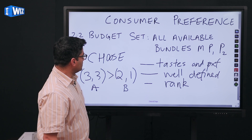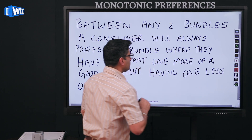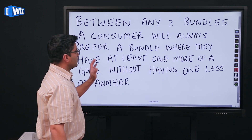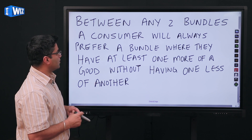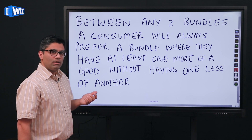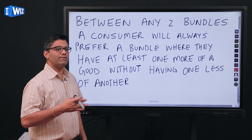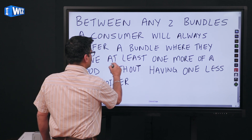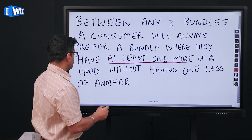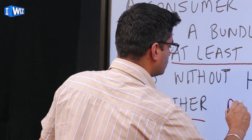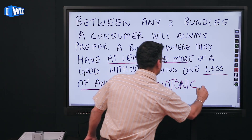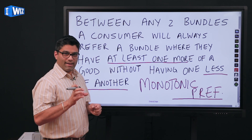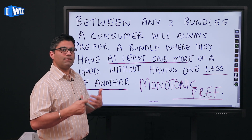Putting these choices more formally, there's an important concept called monotonic preferences. Between any two bundles A and B, a consumer will always be happier if they get one more of either of the two goods without having to give up any of the other good. We will always prefer a bundle where we have at least one more of either of the two goods without giving up the other. So if I get one more of good one without giving up any of good two, I will always prefer that bundle.